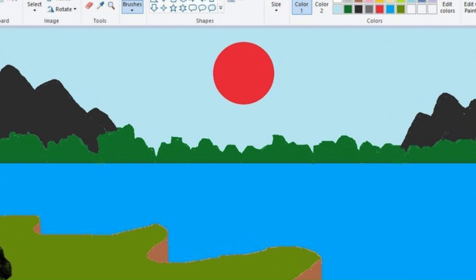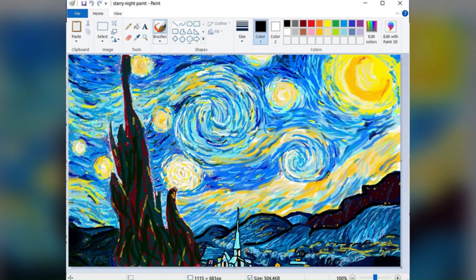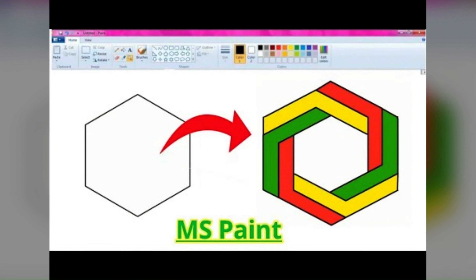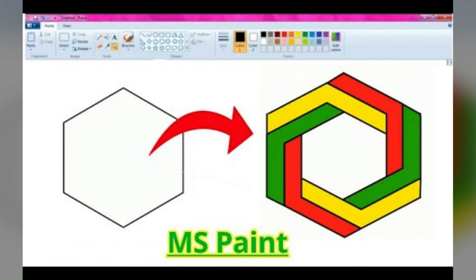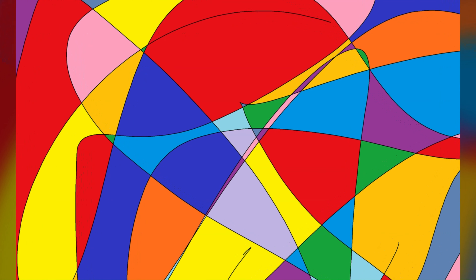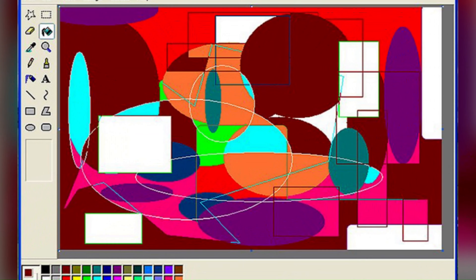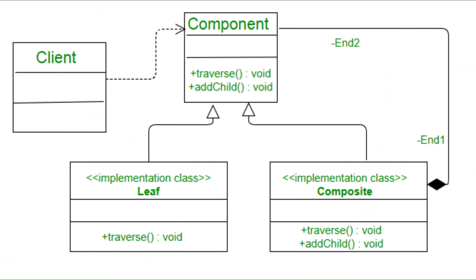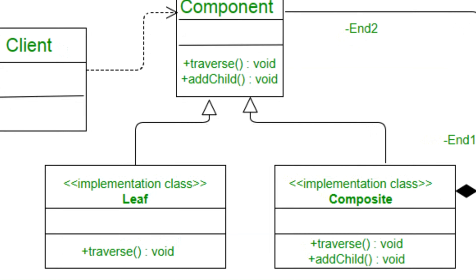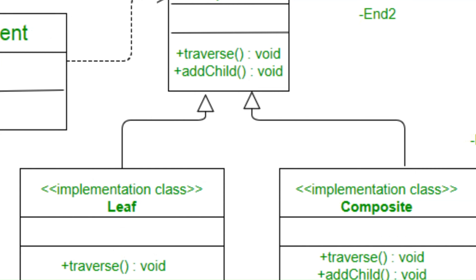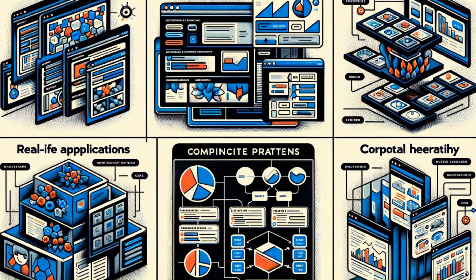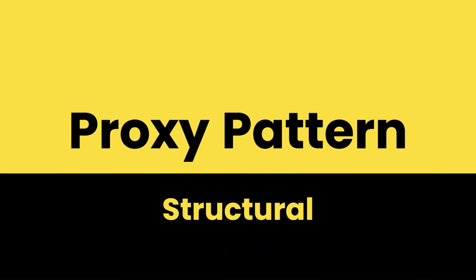You can think of it like a graphical application where you have the ability to create circles, squares, and complex shapes like pentagrams or hexagons. All of these can be combined into a single picture to generate an image. Whenever you have objects that should be treated the same way regardless of their complexity, such as in a part-whole hierarchy, consider using the Composite pattern.